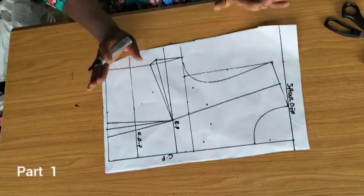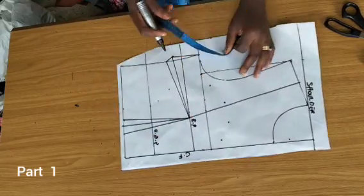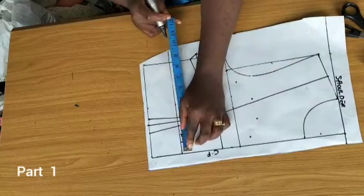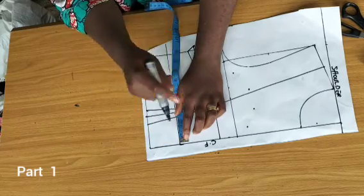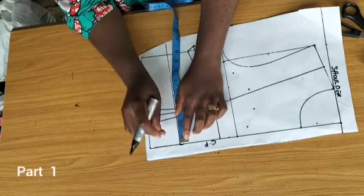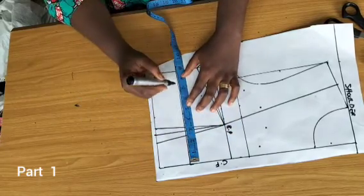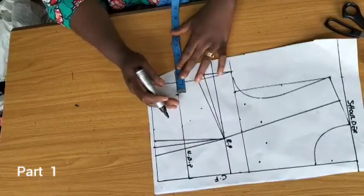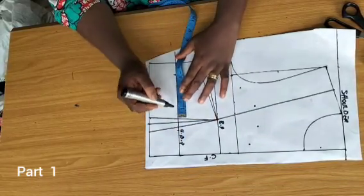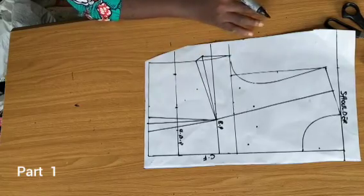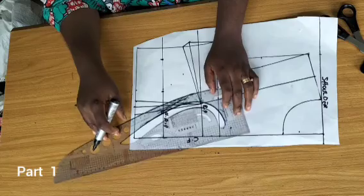But before I do that, let me finish with my under bust contour line. I choose to contour my under bust from the center front, taking my tape around my under bust, divide by four. This is the result I got. Whatever I have remaining here, I'm going to put 0.25 here and the rest of it right here for a perfect under bust contour line.